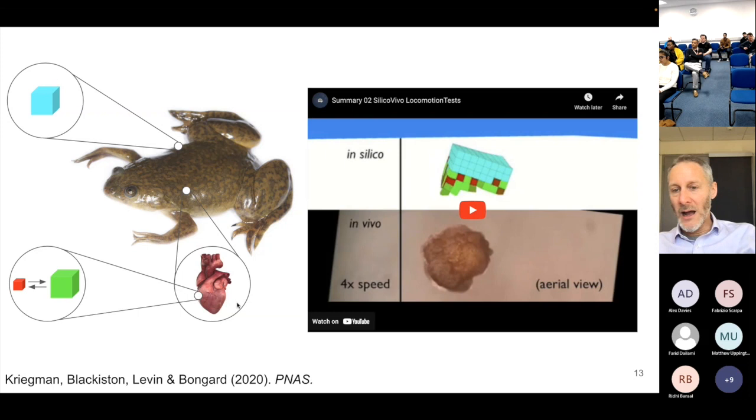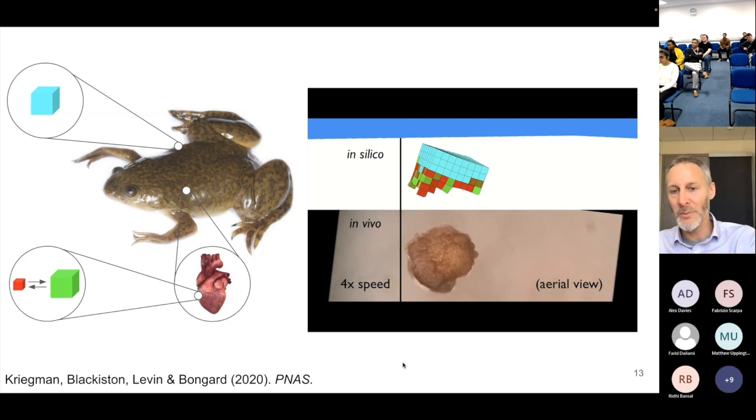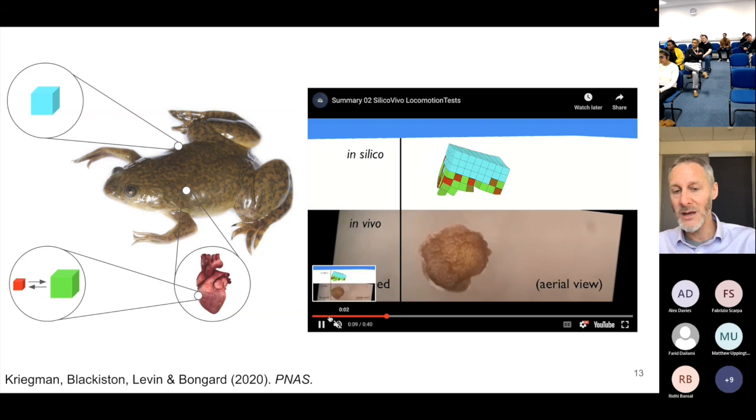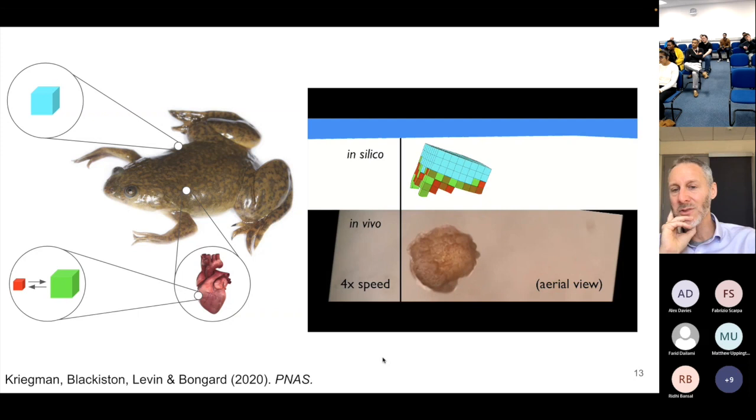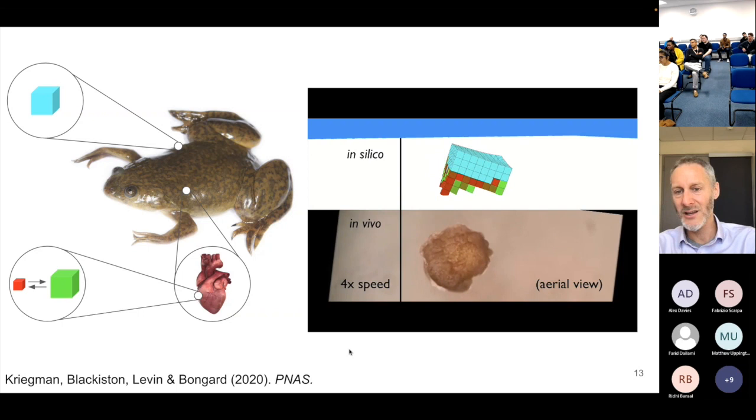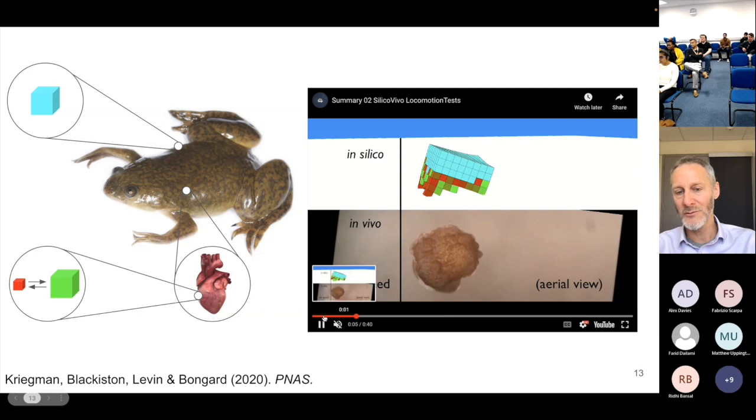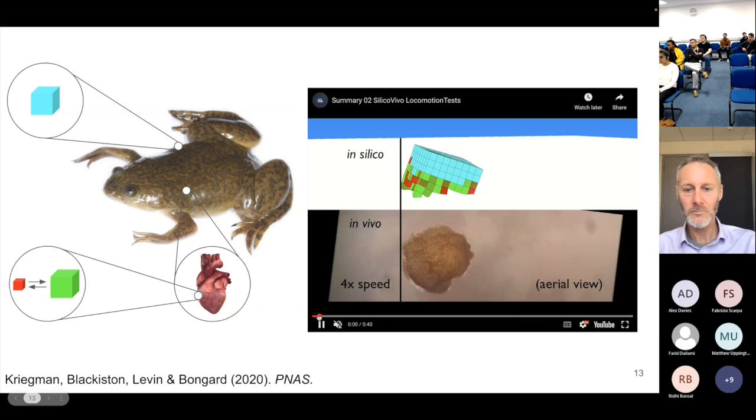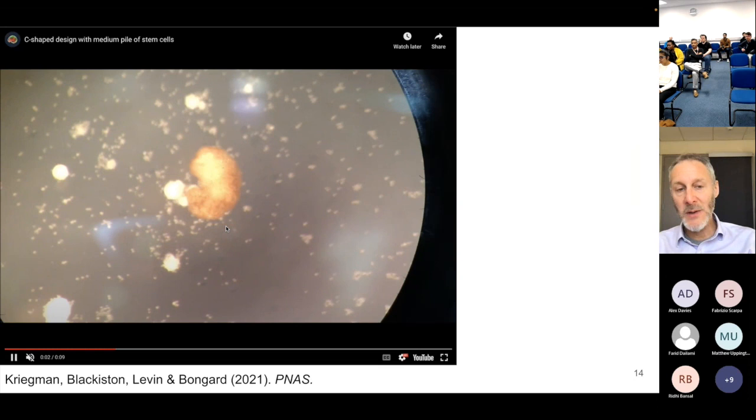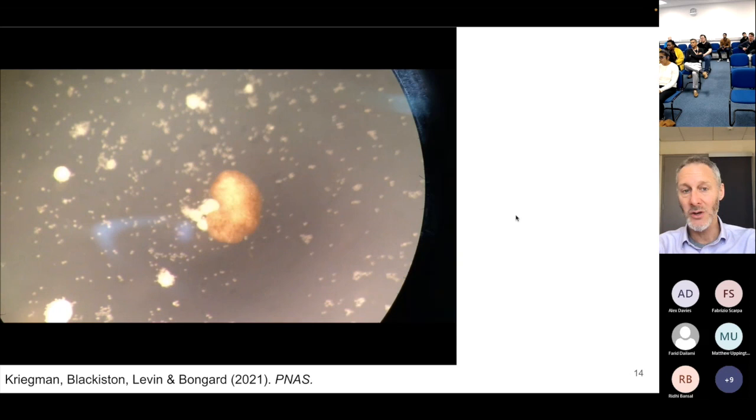I wouldn't be telling you about this project if we weren't successful in crossing the sim-to-real gap. It took us a fair bit of work to make this happen, but here's a successful attempt. You can see the manufactured bot in the bottom, and although it doesn't quite have exactly the same 3D shape, it doesn't move in exactly the same way as the evolved solution in silico. It's close enough. We show that this is better than chance. It's not just a result of the spontaneous action of myocardiac tissue. We've retained some of this evolved form and function into the physical bot in this case.